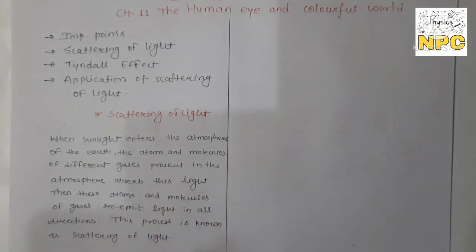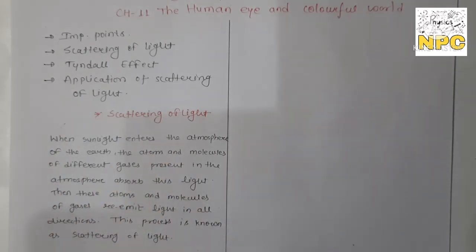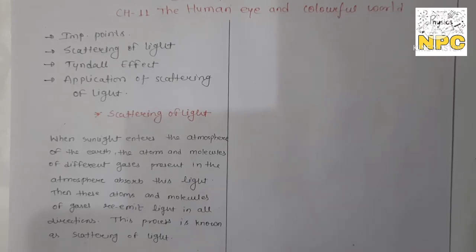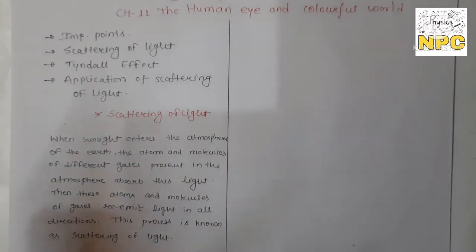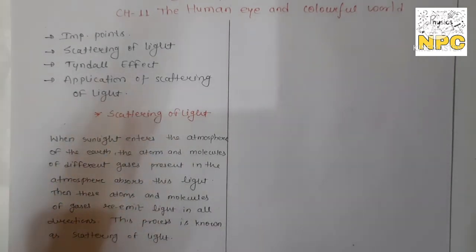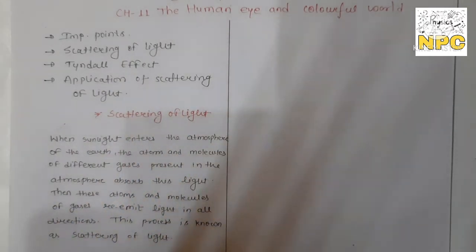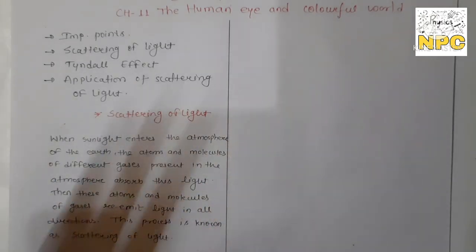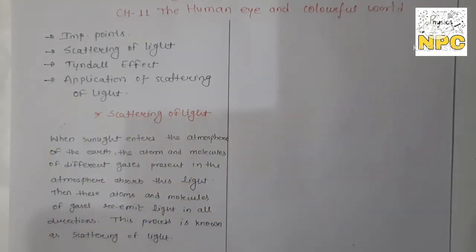From now we are going to start a new phenomenon of light, and that is all about the scattering of light. In this video we are going to deal with the scattering of light, the Tyndall effect, and applications of scattering of light — like why the sky is blue, what happens at sunset and sunrise, why the sun appears reddish, and more. So stay tuned and watch this video till the end.